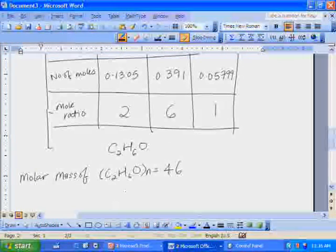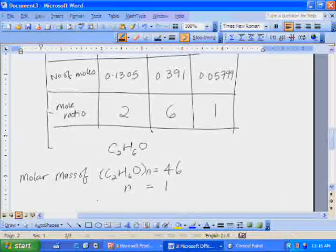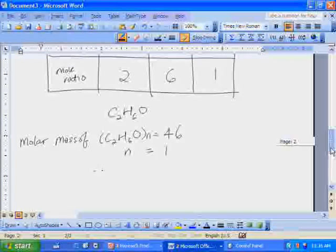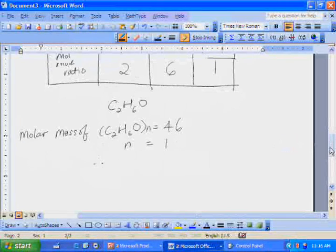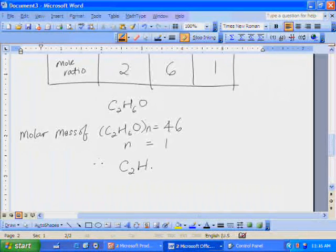And therefore, n is equal to 1. So the mole ratio is 1, meaning the empirical formula is the same as the molecular formula, that is C2H6O.